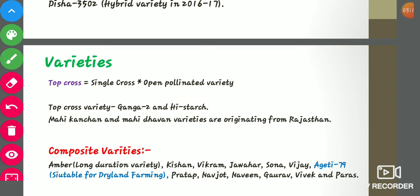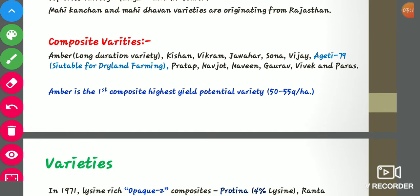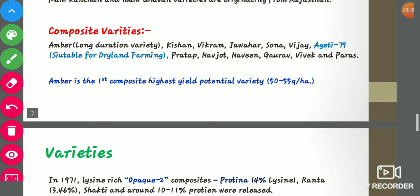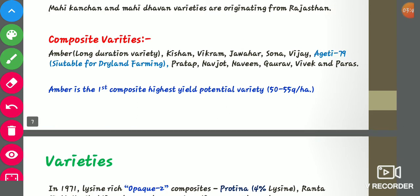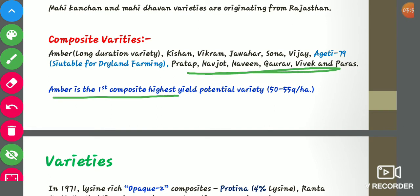Now come to composite varieties. A composite variety is developed by mixing seeds of different phenotypically outstanding lines that have similarities for various characters like plant height, seed size, shape, seed color, maturity, etc. Examples include Amber — which is a long duration variety — Kishan, Vikram, Jawahar, Sona, Vijay, Ageti 79 (suitable for dryland farming), Pratap, Navjot, Navin, Gaurav, Vivek, and Paras. Amber is the first composite with the highest yield potential of 50 to 55 quintals per hectare.